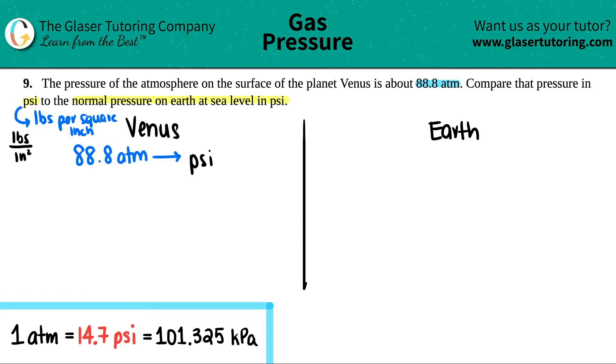So start with what you're given. 88.8 atm times by a ratio. Throw the unit that you don't want on the bottom. We don't want ATM, so that goes on the bottom. And we want PSI, so that goes on the top.